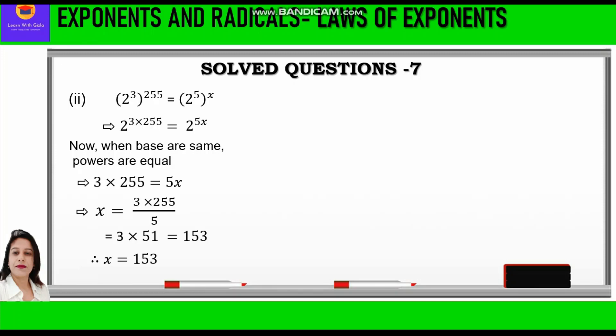Further we shall take up question number 3. It is given 2 raised to power x plus 2 is equal to 4 raised to power 2x minus 1. Now 4 is 2 square, so we shall write 2 raised to power x plus 2 is equal to 2 square whole raised to power 2x minus 1. Opening the brackets: 2 raised to power x plus 2 is equal to 2 raised to power 4x minus 2.